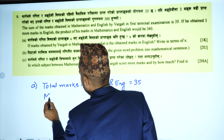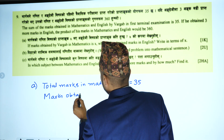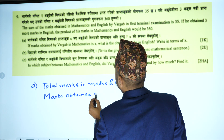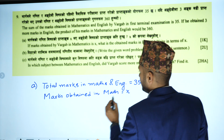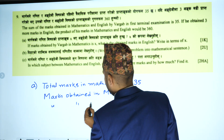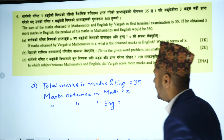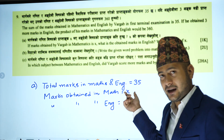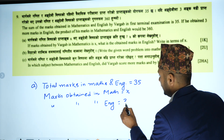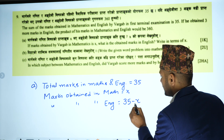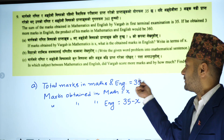The marks obtained in maths and English are 35. Math marks is x, so English marks is 35 minus x. Math plus English equals 35. Math is x, English is 35 minus x.